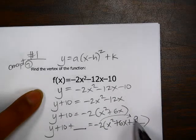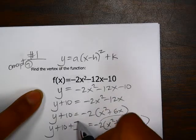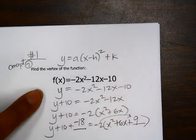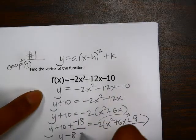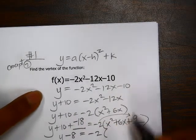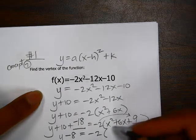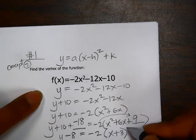If I multiply the 9 by negative 2, that gives me negative 18, which needs to be added to this side to balance out the equation. So then we get y minus 8 equals negative 2. This needs to be factored, so this is equivalent to x plus 3 times x plus 3.